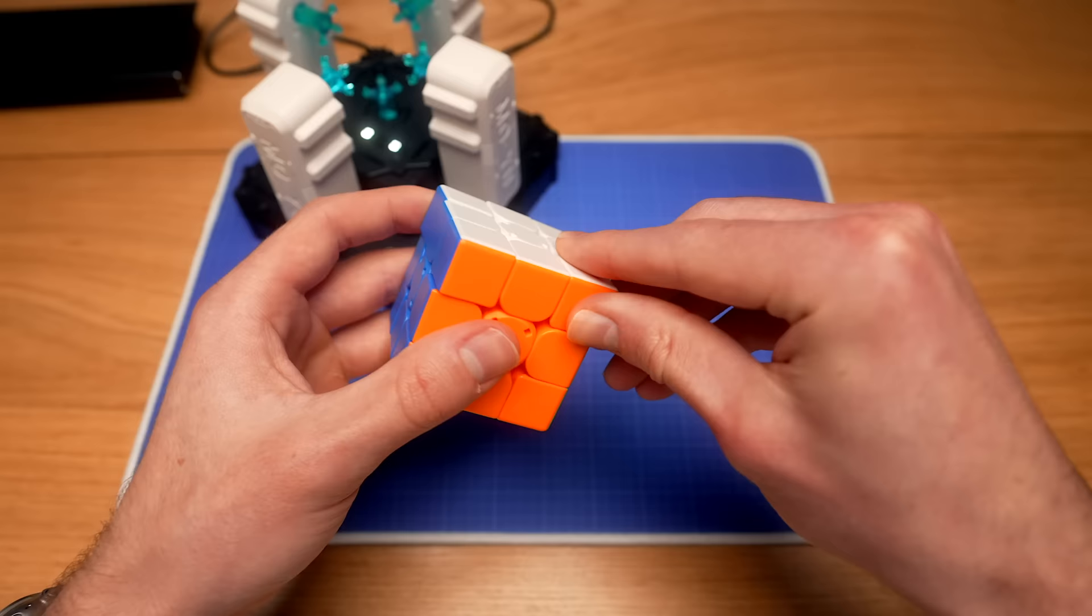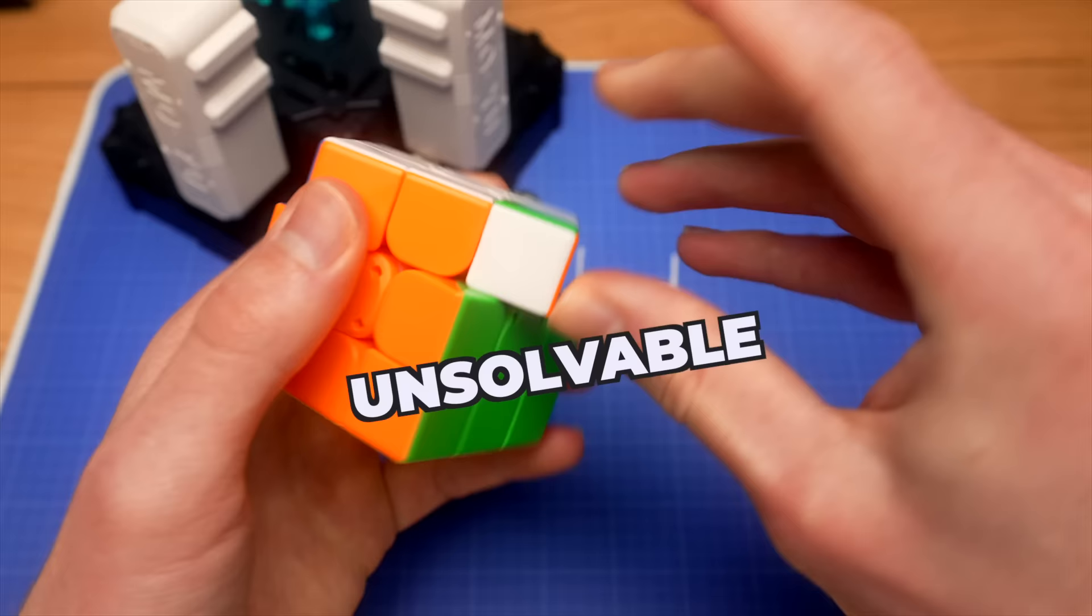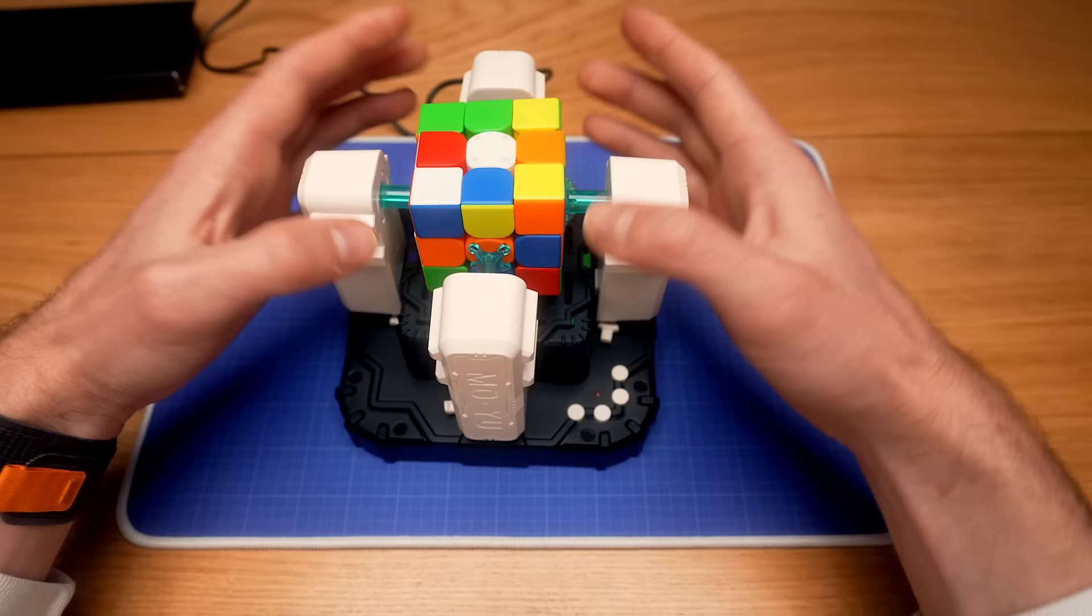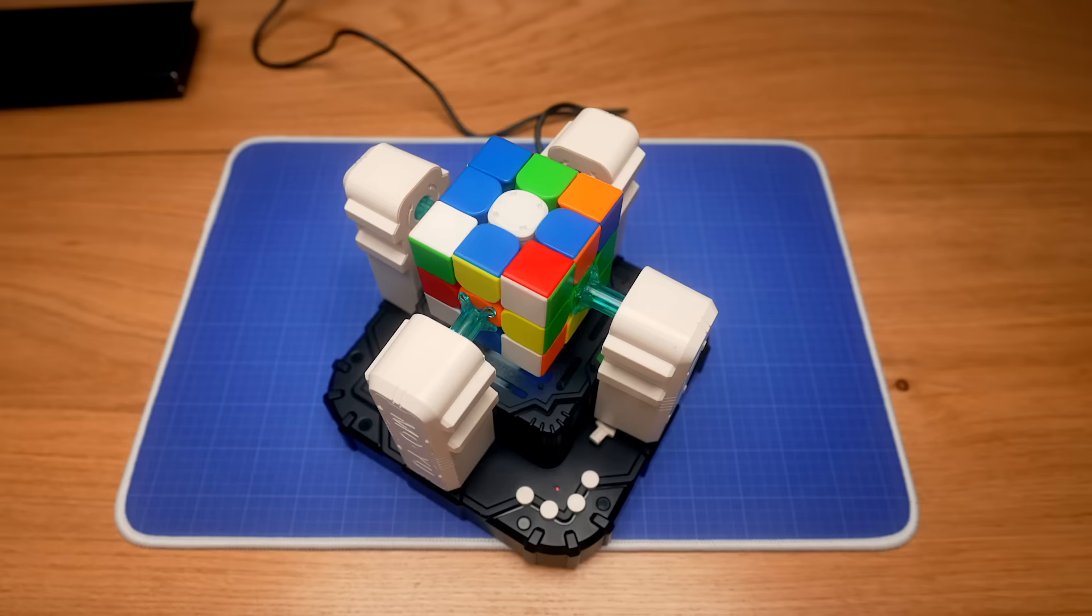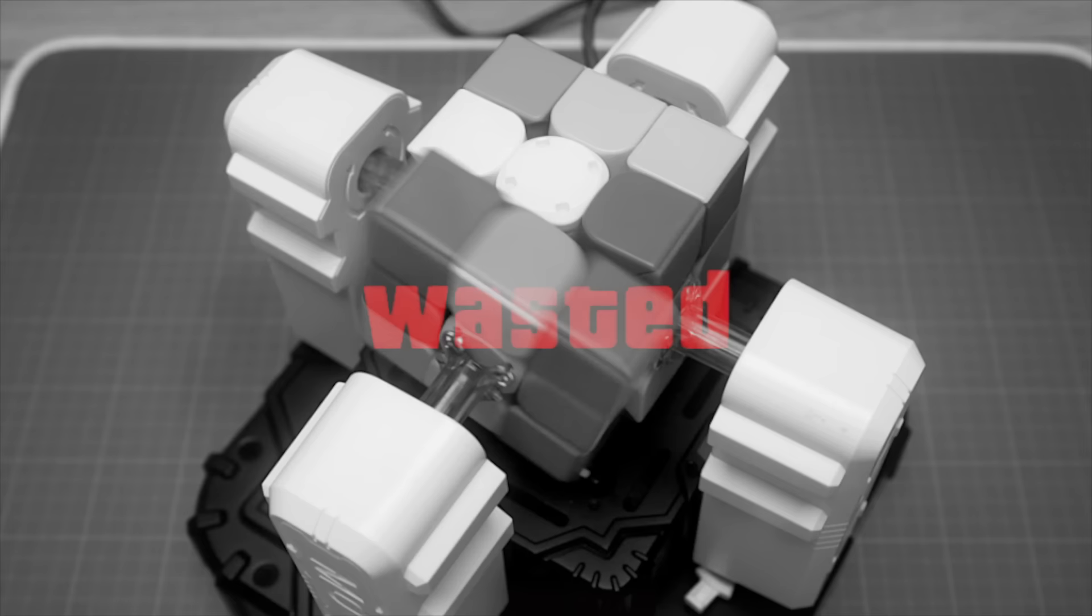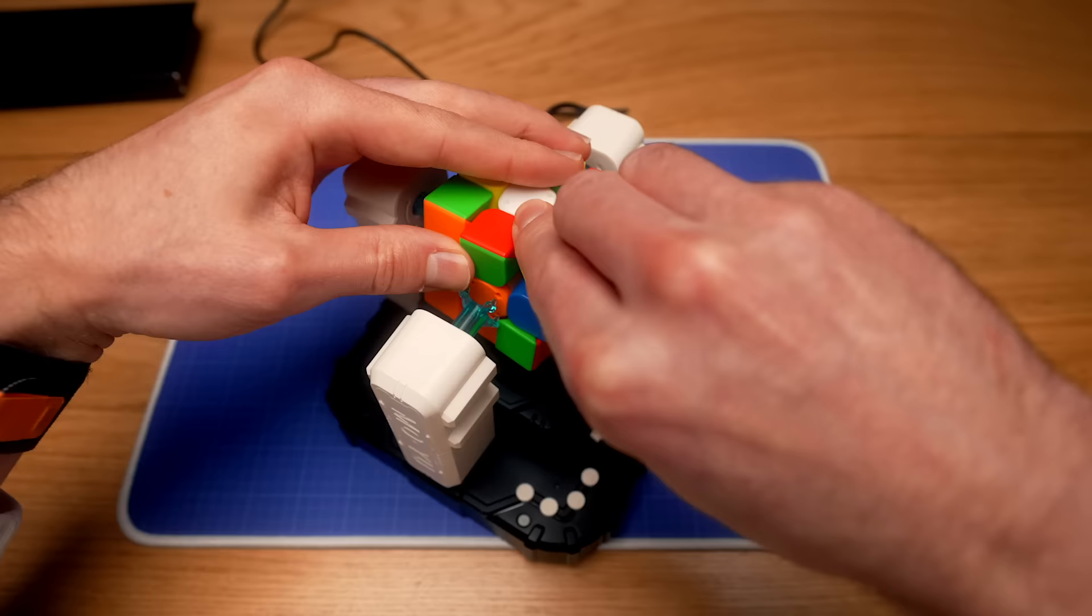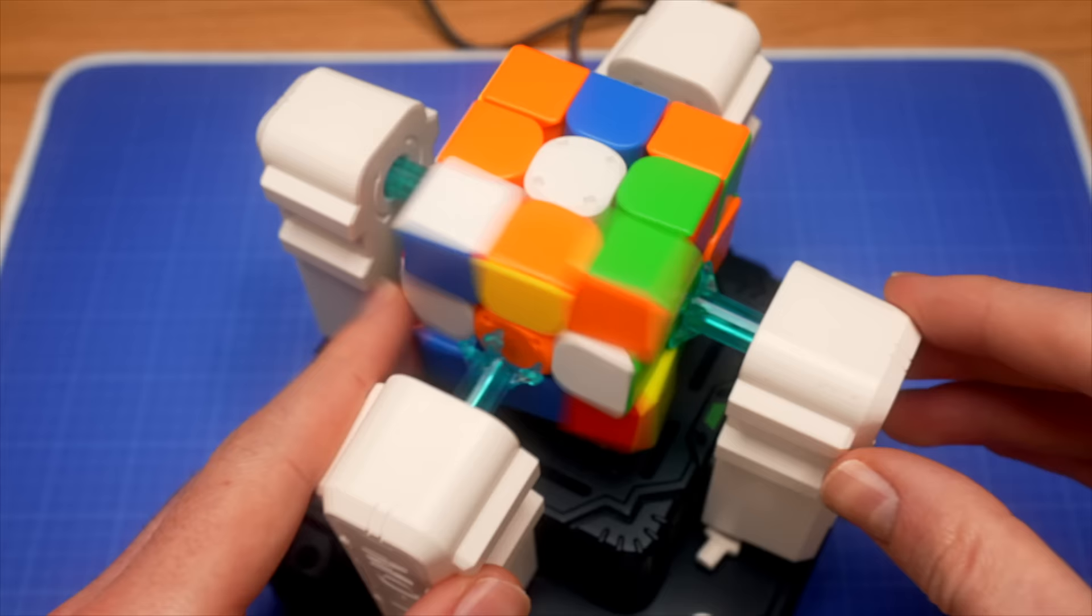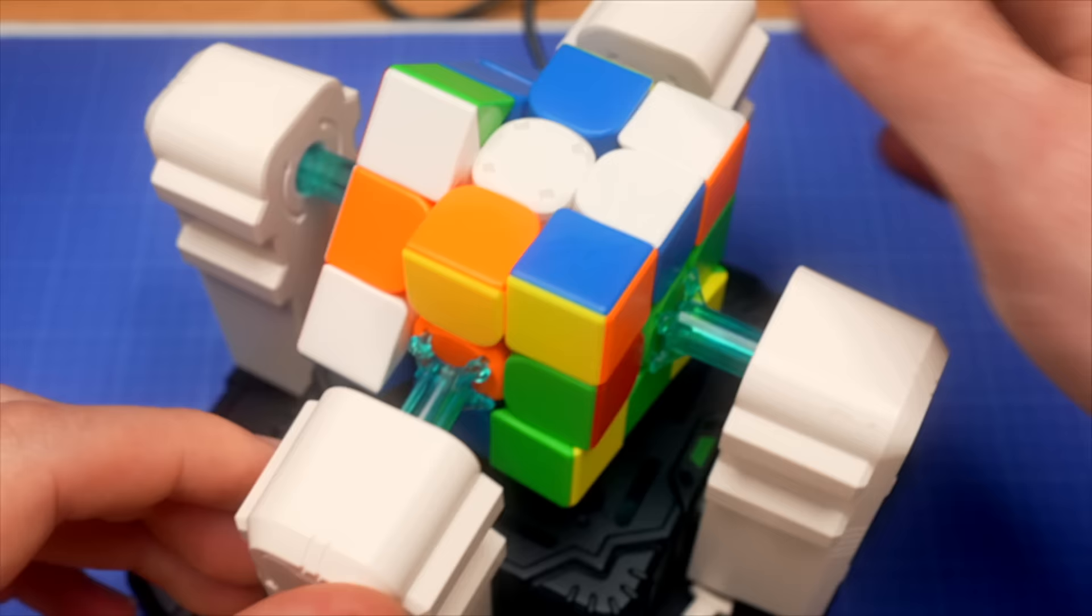Actually, what does the robot do if you give it an unsolvable scramble? Scrambling it up to make it more confusing. Many unbearable hours later. Okay, you can't do it. Let me help it a bit by giving it another corner twist. Oh no, oh no, oh no.